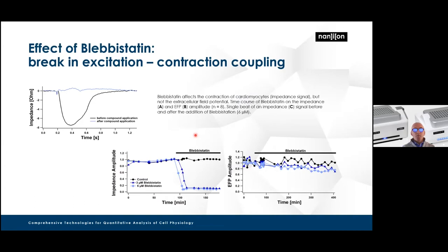Another nice example of why it's very important to look at both impedance contractility and field potential measurement is shown here with this myosin kinase 2 inhibitor, blebbistatin. If you look at the field potential measurements, there is very little or no effect over long periods of time, whereas there's a very rapid and profound inhibition of contractility. Having this ability to measure both of these parameters on the same instrument at the same time in the same cells really allows you to dissect mechanism of action, which is a big advantage of this system.